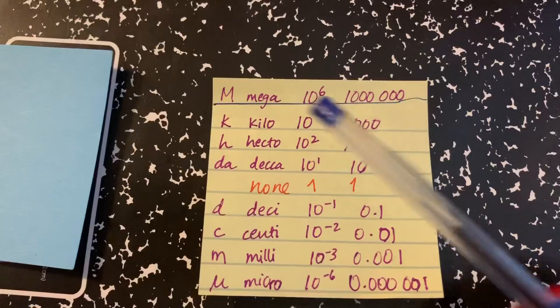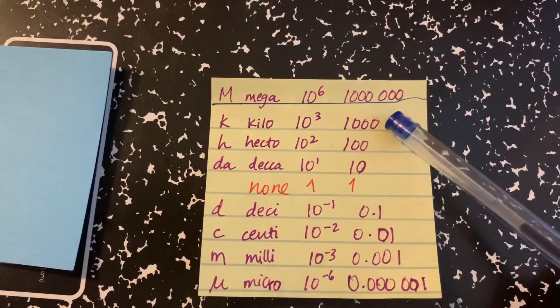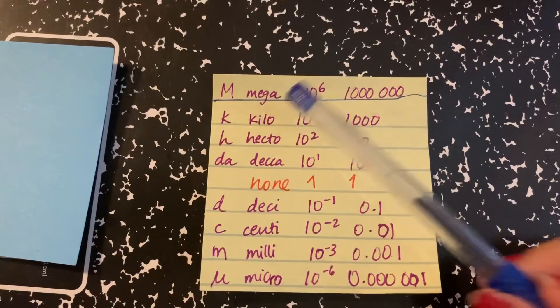HECTO 100, kilo the most known is 1,000, mega is 1,000,000.